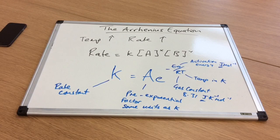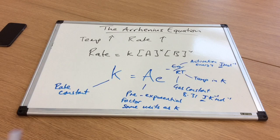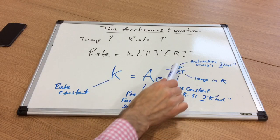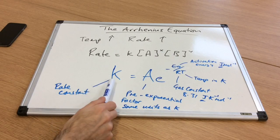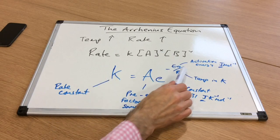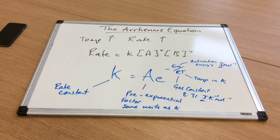Essentially, we can use the Arrhenius equation to predict how the rate constant is going to change with the activation energy, and also how the rate constant is going to change with temperature. We'll look at both of those separately now.